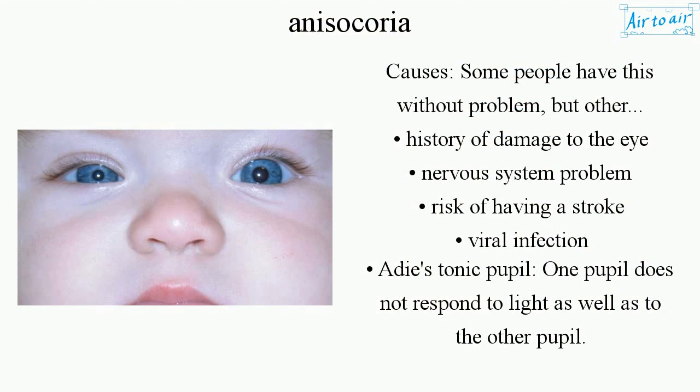Causes. Some people have this without problem, but others may have a history of damage to the eye, nervous system problems, risk of having a stroke, viral infection, or Adie's tonic pupil — where one pupil does not respond to light as well as the other pupil.